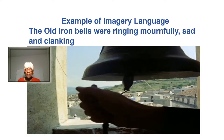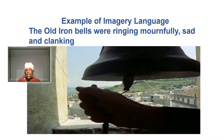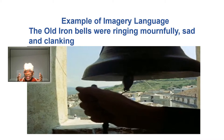Here's another example of imagery language. Let's look at the iron bells. What were they doing? They were ringing mournfully — ringing sad — and they were clanking. Can you see that picture in your mind?